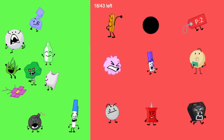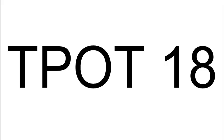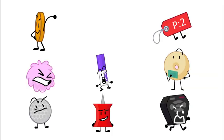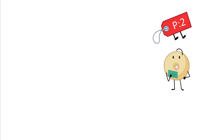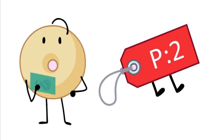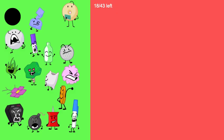The next nine up for elimination are Koine, Blackhole, Pricetag, Puffball, Marker, Donut, GolfBall, Pin, and Remote. The first seven safe are Blackhole, Marker, Pin, GolfBall, Koine, Remote, and Puffball. The final two are Donut and Pricetag. Donut would be safe in this scenario. Pricetag pretty much would have lost their novelty at this point.